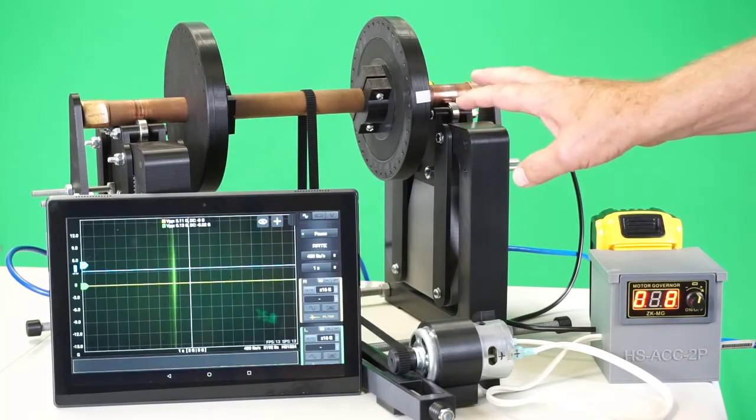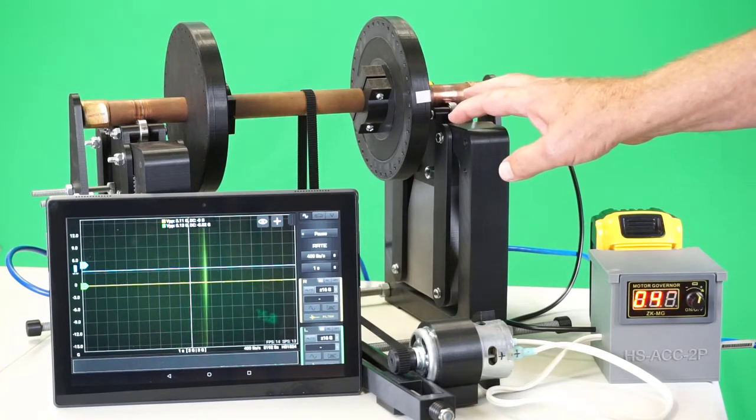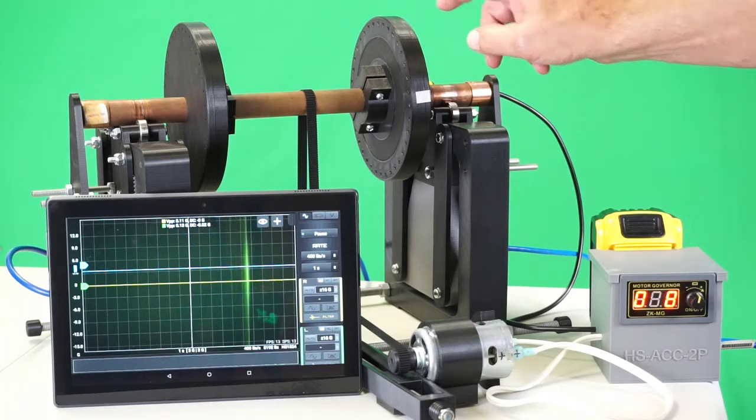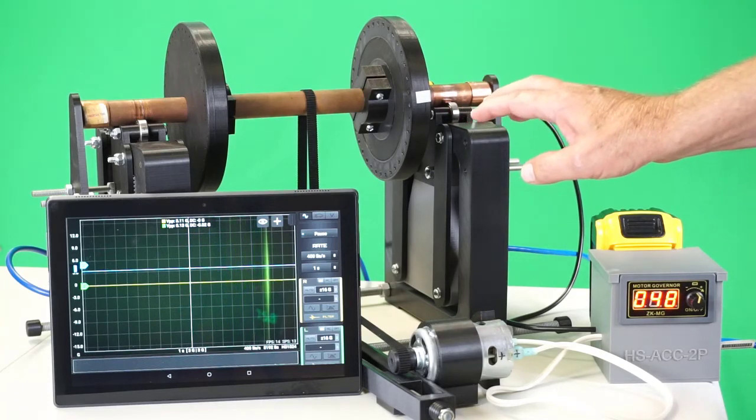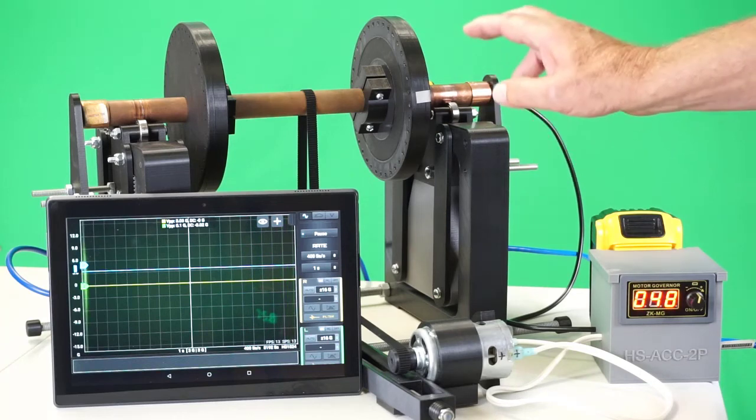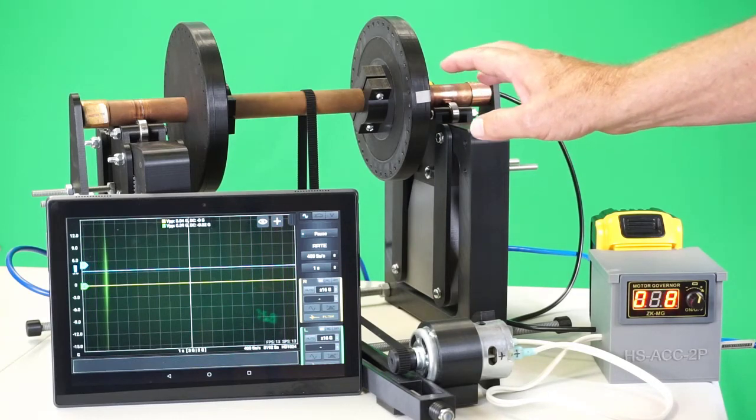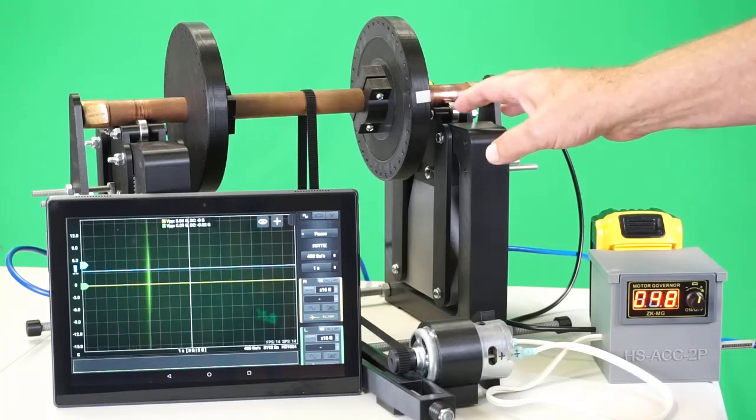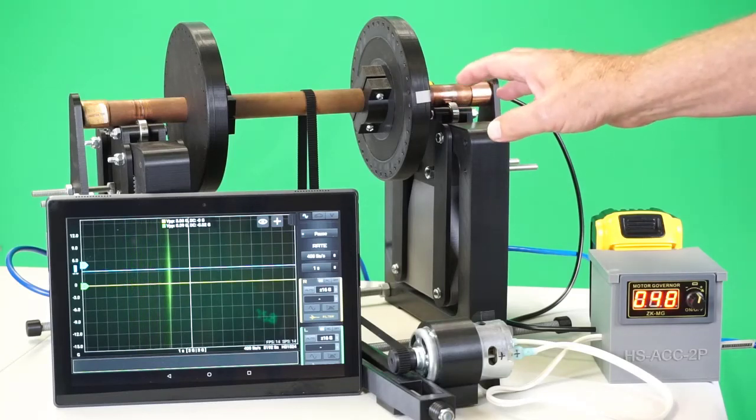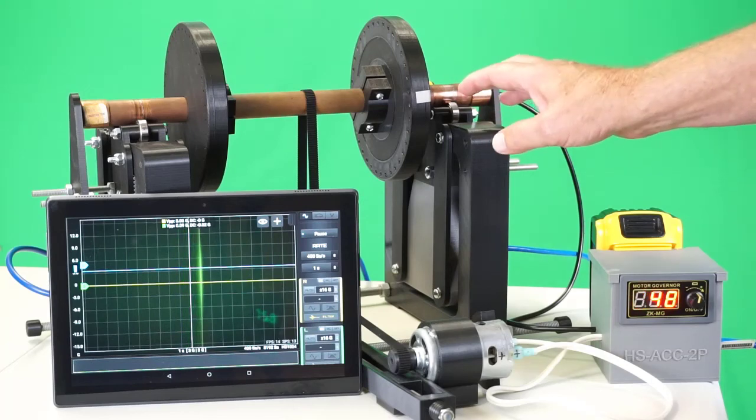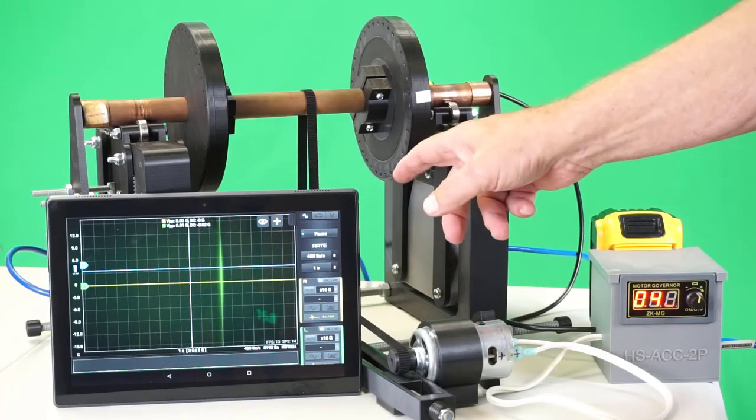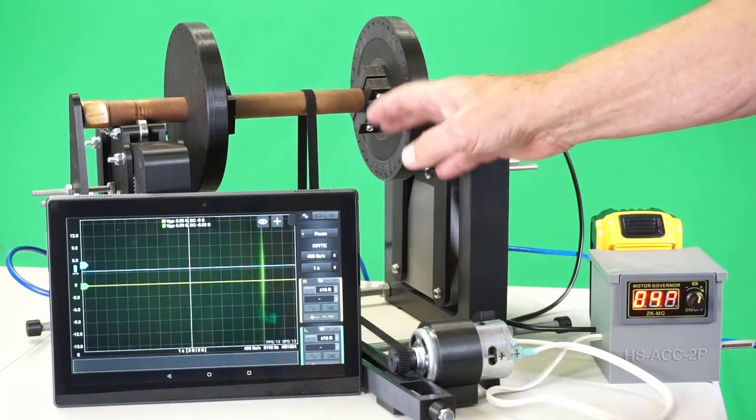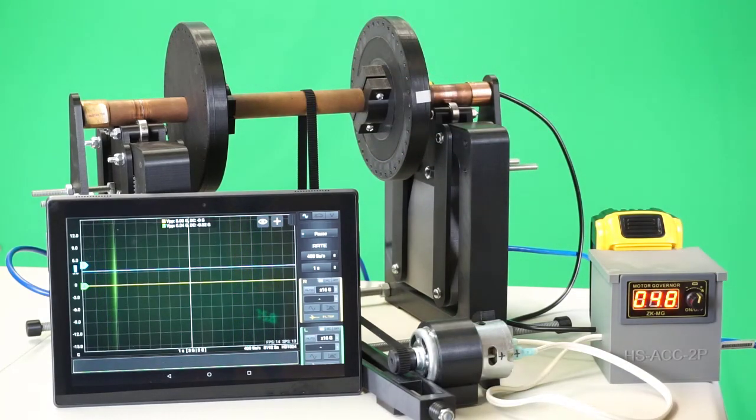So the next video is going to be a demo on the procedure to balance with this and its capabilities. So here's a spoiler alert. This balancing machine, based on the HS-ACC platform, using budget components, is capable of ISO G2.5, a balance grade usually reserved for machines tens of thousands of dollars. We'll catch you guys then.